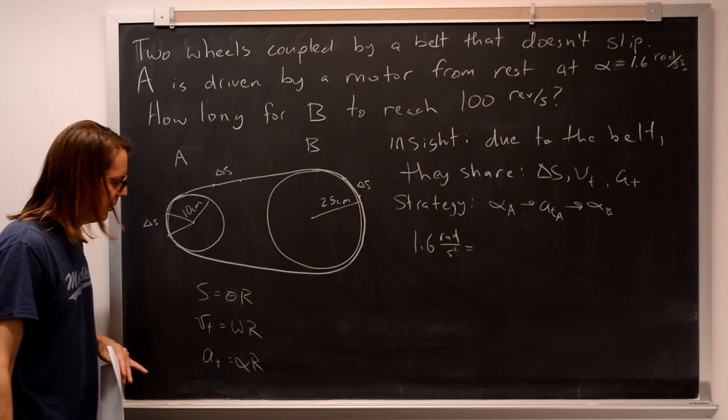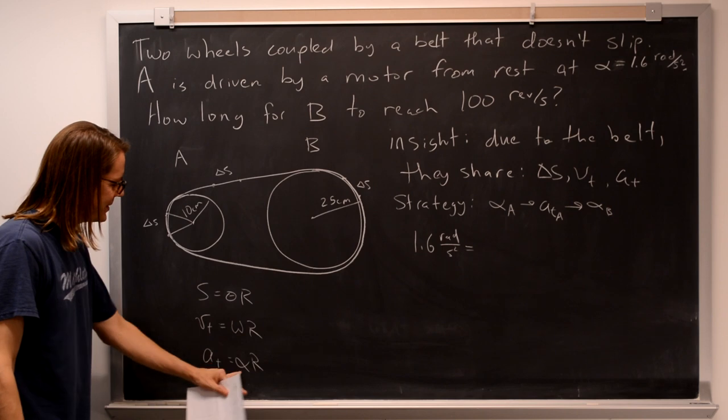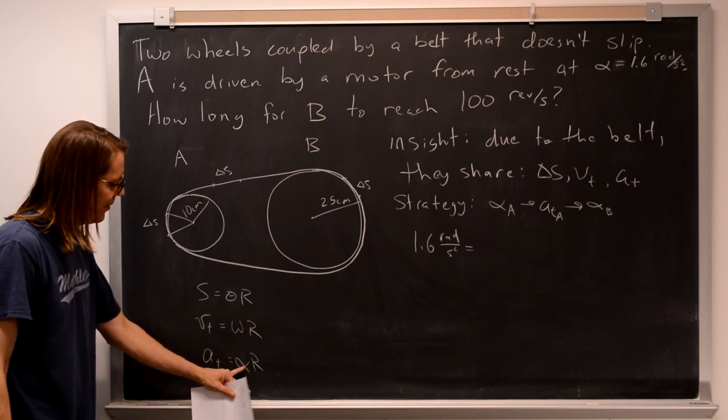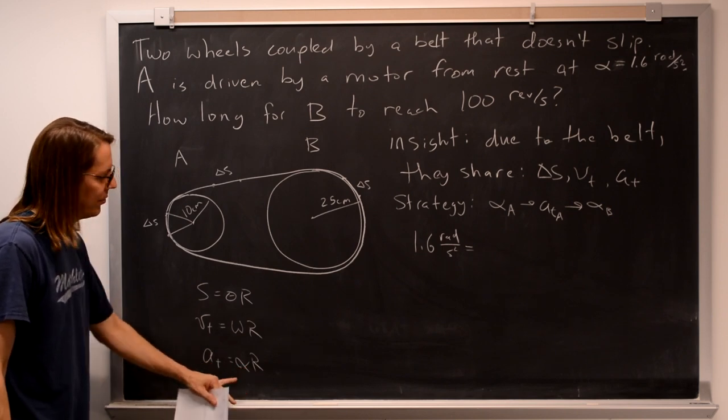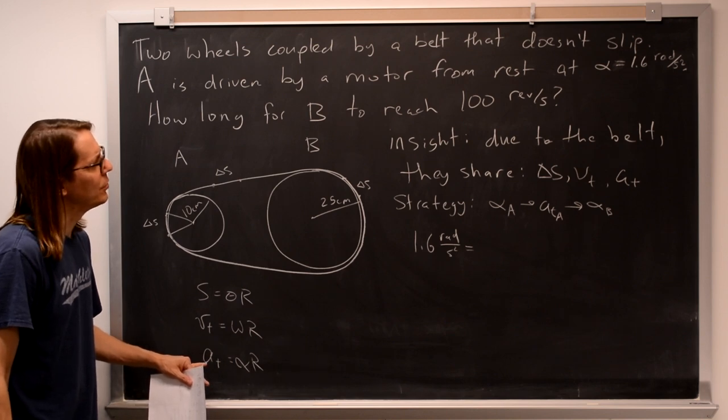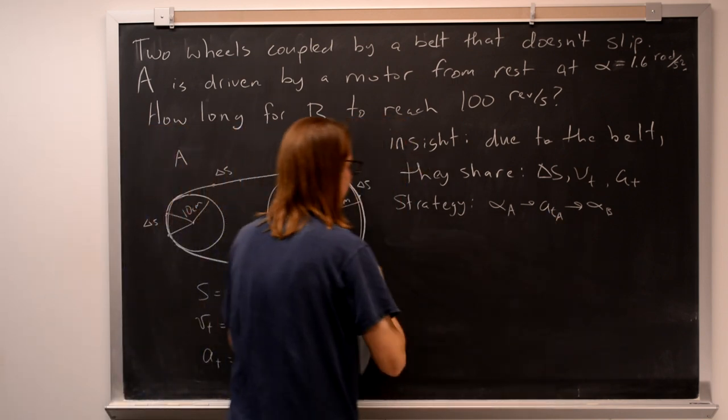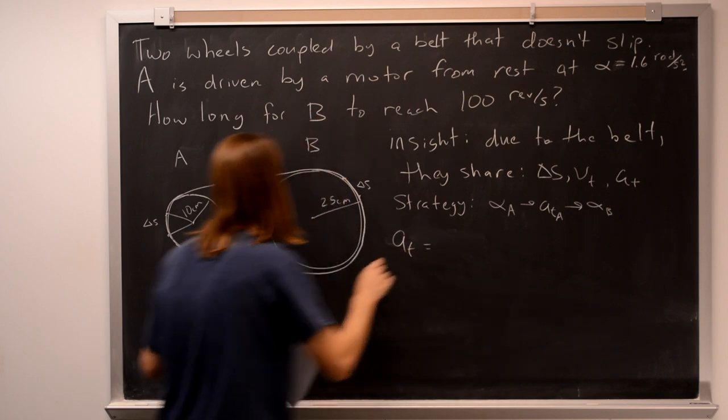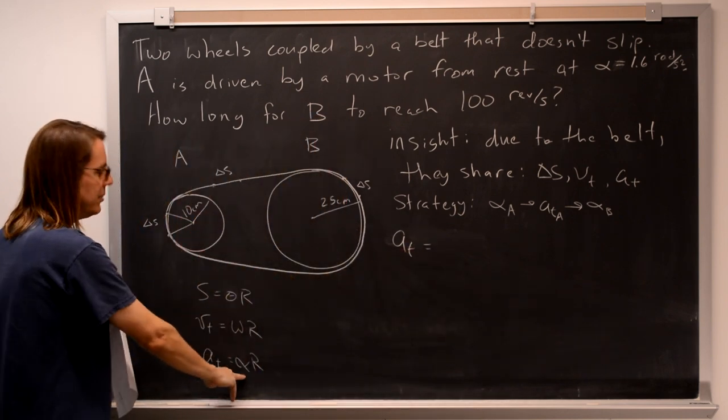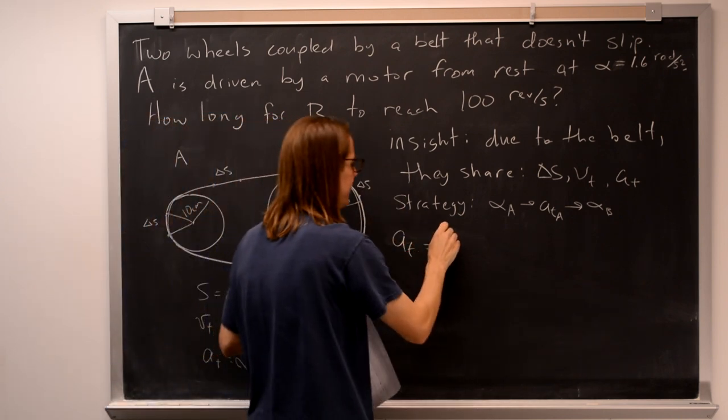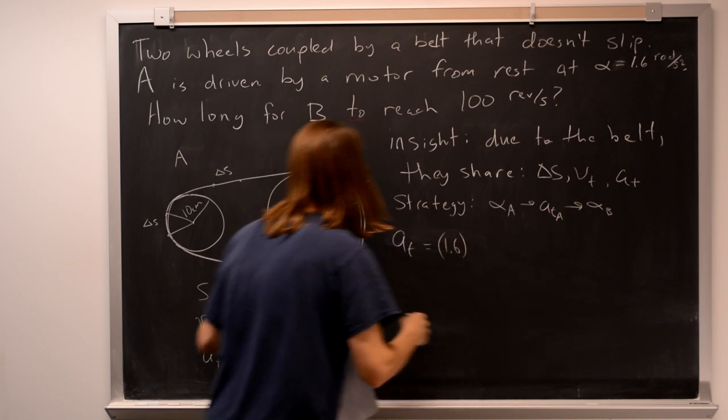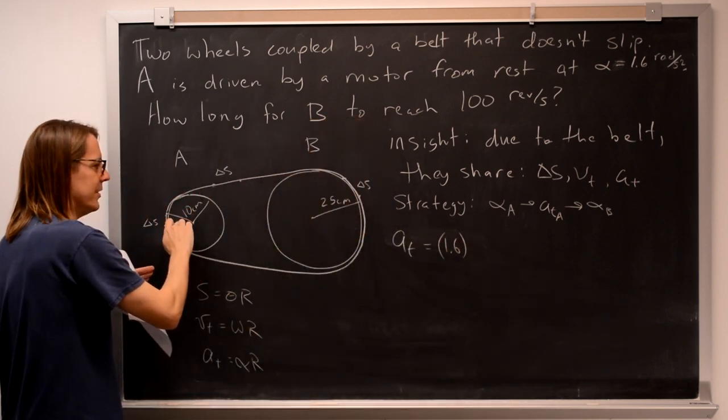If you've got to memorize those, you'll be able to do that again real quick. Because what this tells us is that if we're given alpha, we know it's equal to At over R. Or in this case, we're looking for At. We're looking for the tangential acceleration over here. So it's equal to alpha 1.6 times R. So on this disk, that's 0.1 meters.